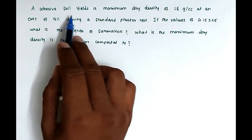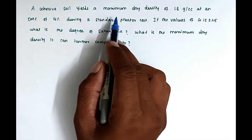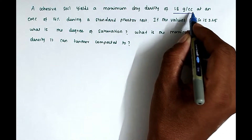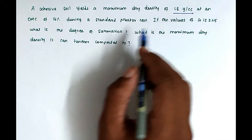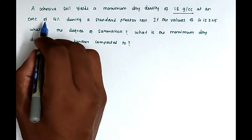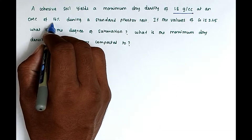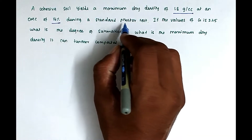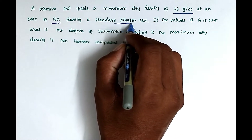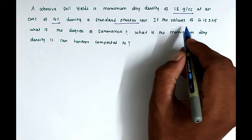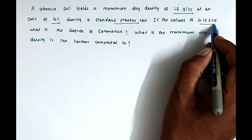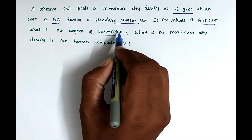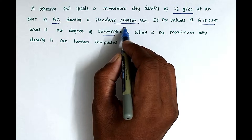So the question is: a cohesive soil yields a maximum dry density of 1.8 gram per centimeter cube at an OMC — that is optimum moisture content — of 16 percentage during the standard proctor compaction test. So if the value of G equals 2.65, what is the degree of saturation, that is the S value?